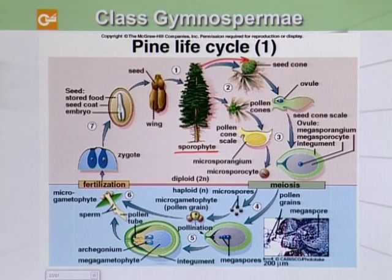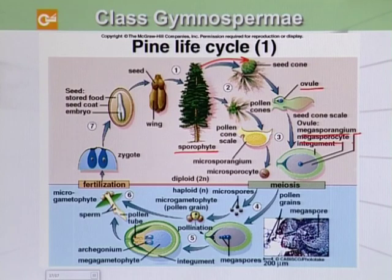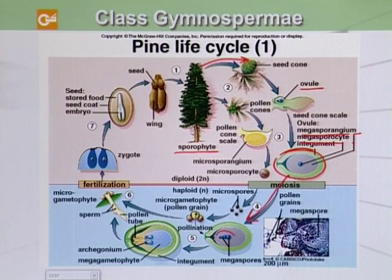The seed cone produces an ovule, which is actually a megasporangium containing the megasporophyte and covered by an integument. It undergoes meiosis, producing four cells, and one remains functional as the megaspore, as shown in the diagram.